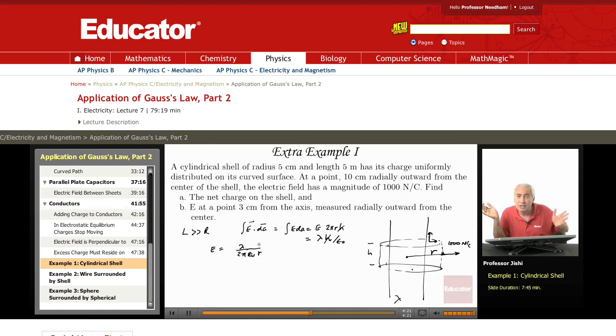As long as you're outside, it's all the same. Whether it's a line of charge, a cylindrical shell, or a cylinder. As long as you're outside the cylinder or outside the shell, it's the same expression as that for a line charge. 2 pi epsilon 0, that's the electric field. Now this electric field, we're told it's 1,000 when r is 10 centimeters.